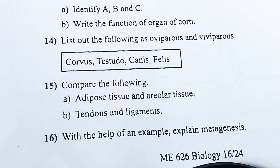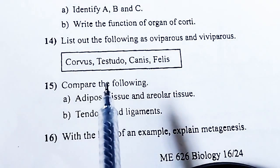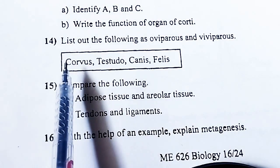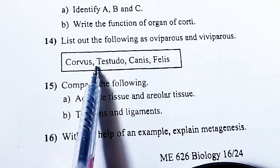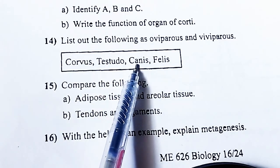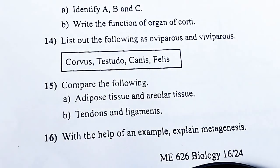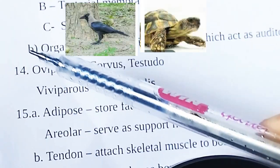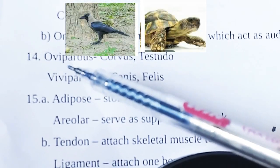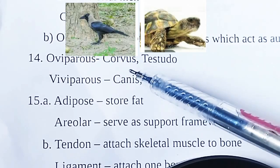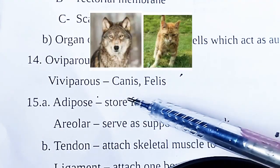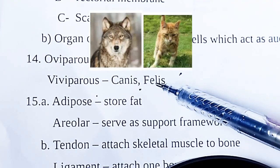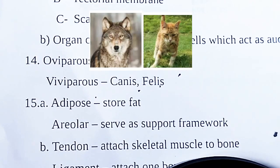List out the animals: Corvus, Testudo, Canis, Phelis. Oviparous animals: Corvus, Testudo. Viviparous animals: Canis, Phelis.